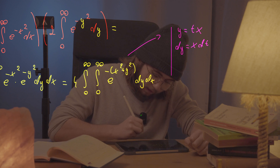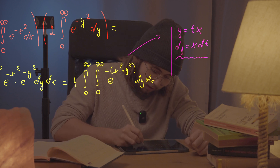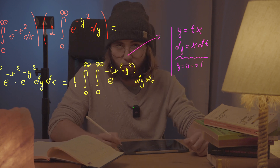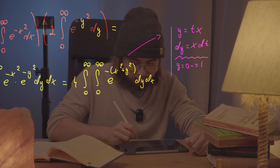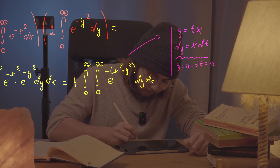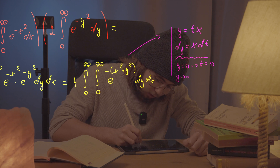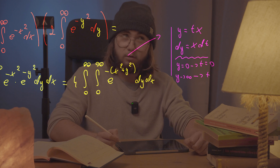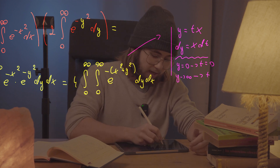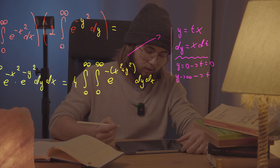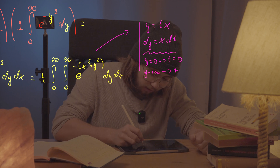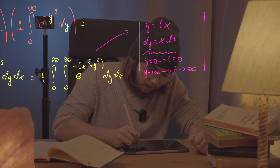For the bounds: when y equals zero, t equals zero over x, so t equals zero. When y approaches infinity, t approaches infinity over x. Since x is between zero and infinity — a positive real — infinity divided by any positive real is positive infinity. So t also approaches positive infinity.